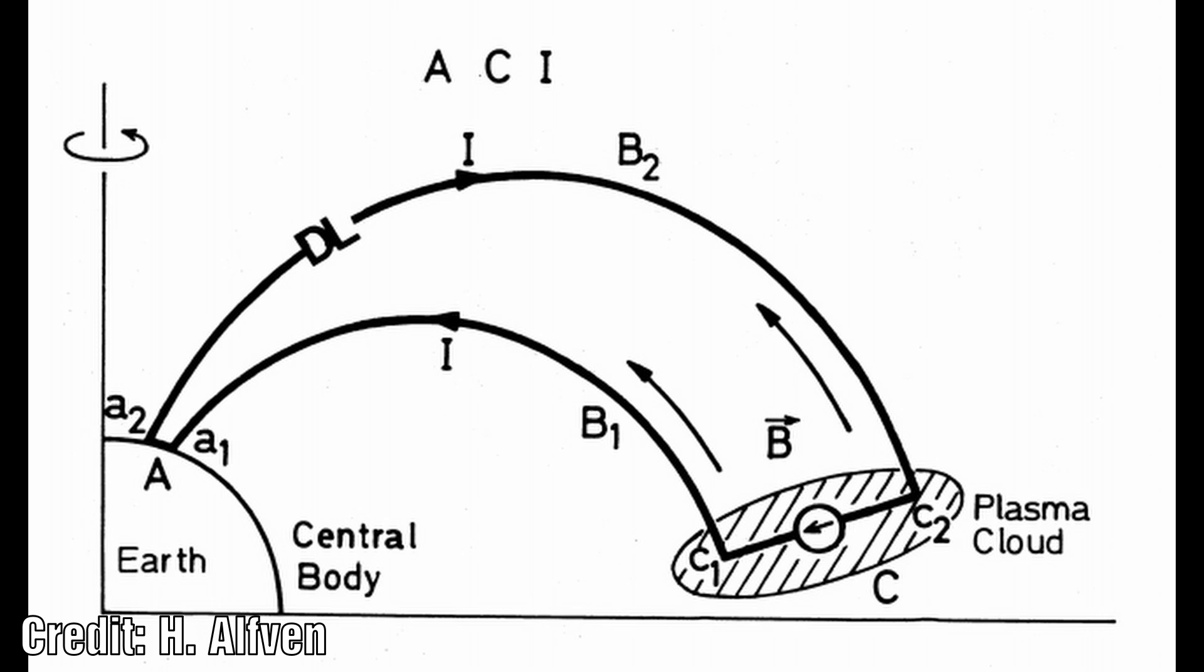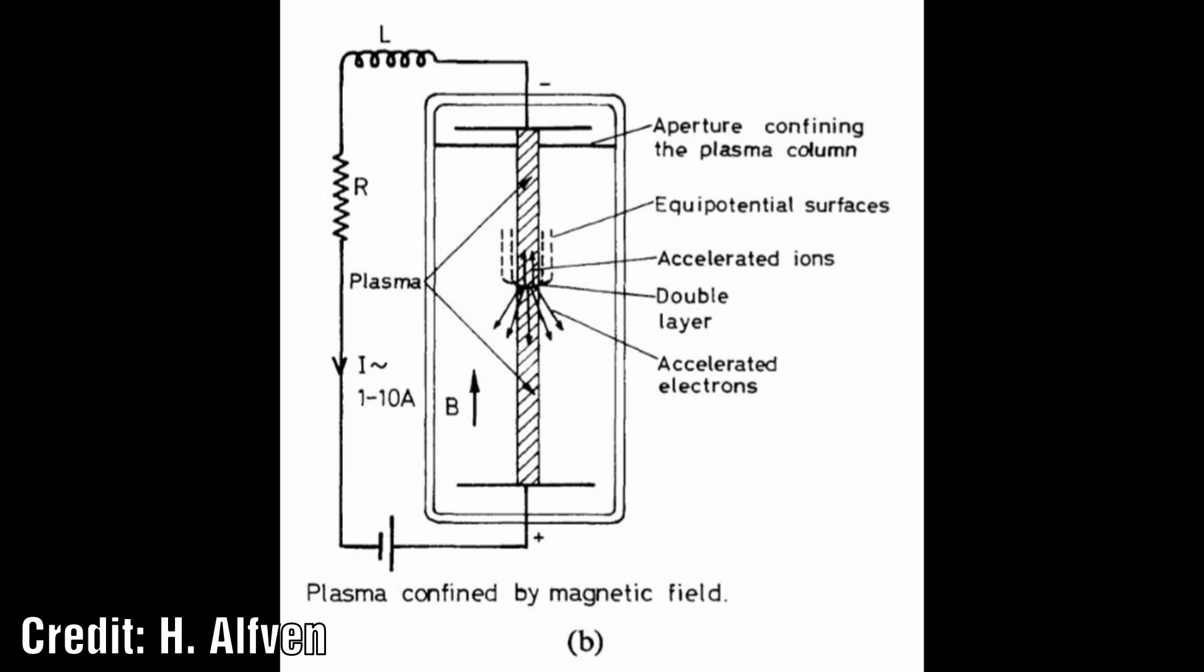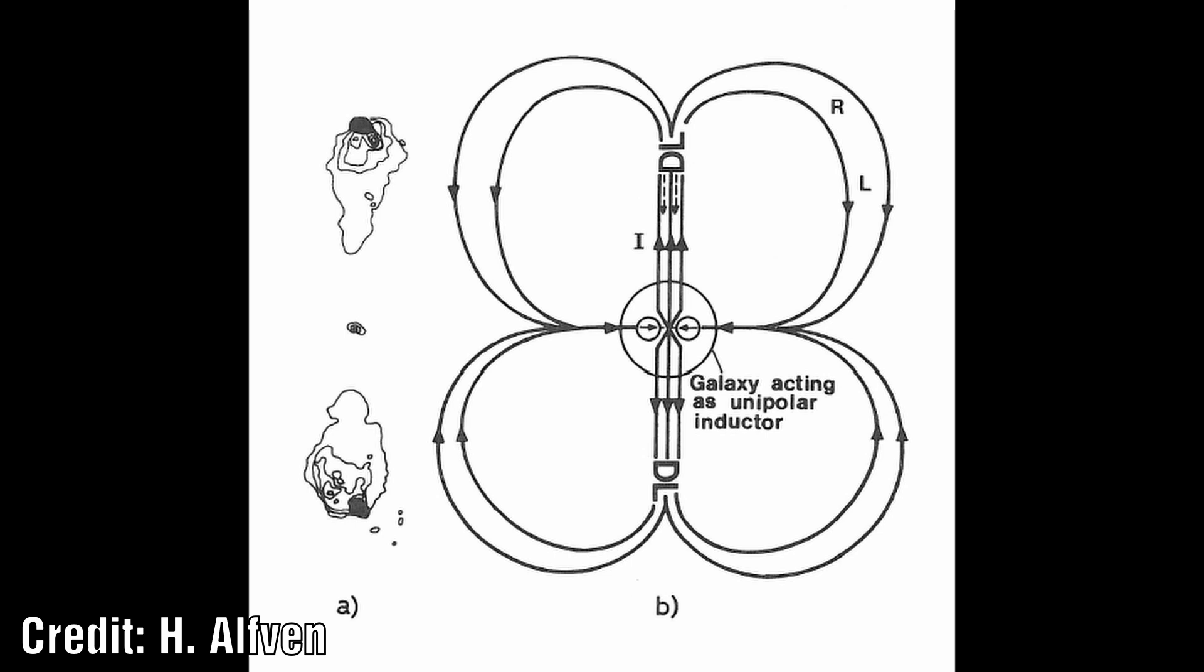It should be stressed that just as in the magnetosphere and in the laboratory, the energy released in the double layer derives from the circuit energy and is transferred to it by electric currents, which essentially consists of relatively low energy particles. There is no need for a beam of high energy particles to be shot out from the central galaxy. On the contrary, the central galaxy may be bombarded by high energy electrons which have obtained their energy from the double layer.